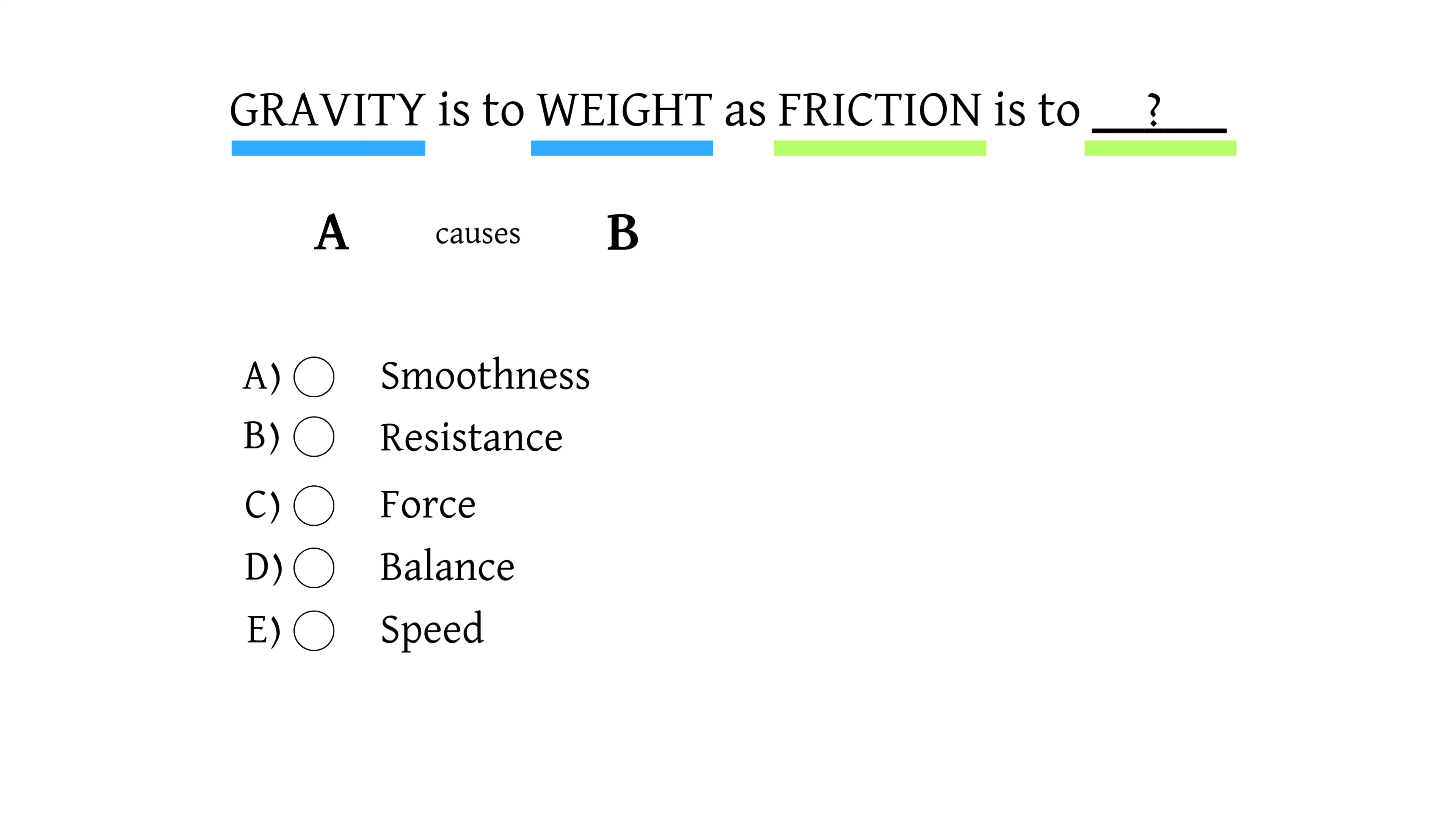So now we're going to look at our answer options and see which has a similar relationship with friction. The first answer is smoothness. Friction is the opposite of smoothness. So this doesn't fit our relationship and we'll eliminate option A.